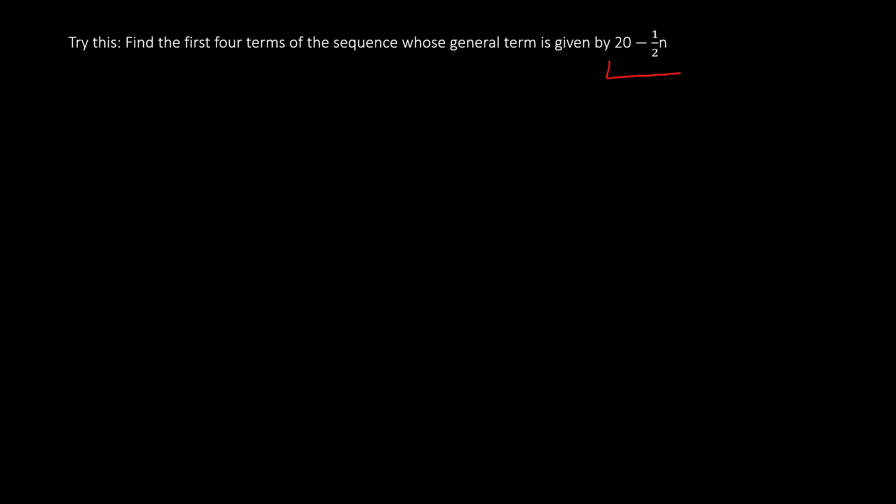Now try this: find the first 4 terms of the sequence whose general term is given by 20 − (1/2)n. Feel free to post your answers in the comment section below.